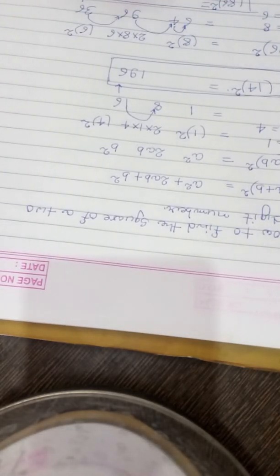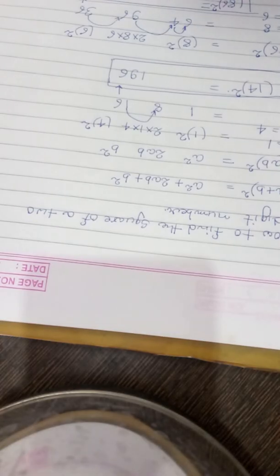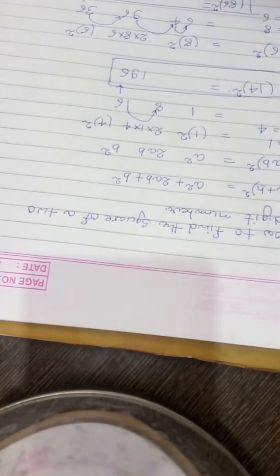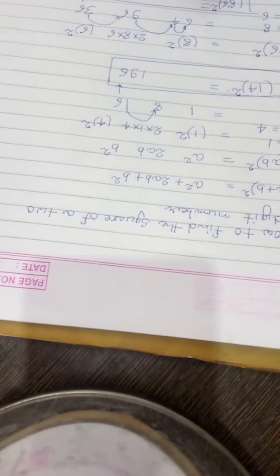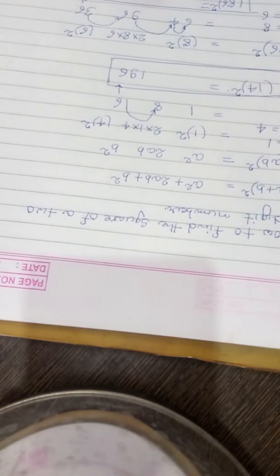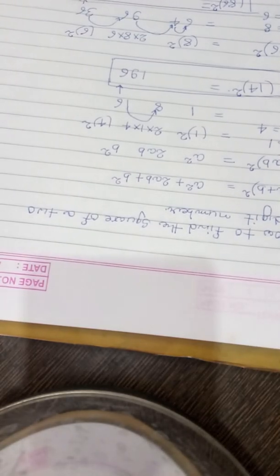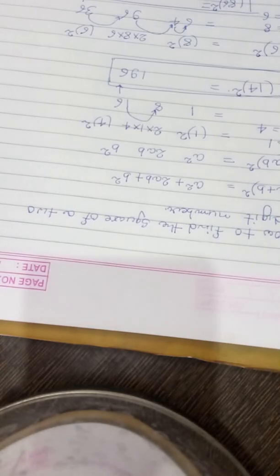I will give you some more examples so you can check it out by yourself by taking different digits. 72 whole square. Again, a is 7, so 7², 2 into 7 into 2. b is 2, so that is 2². So 7² is 49.